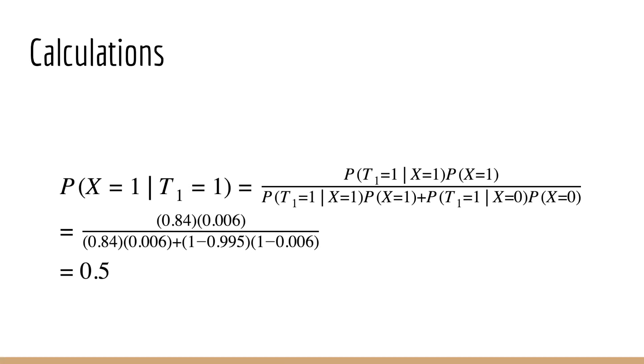Okay, so let's calculate the first posterior. First, you'll recognize that the numerator is just the sensitivity, which is 84%, and the prior, which is 0.6%. On the denominator, we need to find the marginal probability that t1 equals 1. This means that we have to sum over all possible values of x, which means when x equals 1, and when x equals 0. For the case when x equals 1, recognize that this is just the same as the numerator. For the case when x equals 0, we have the probability that the test is positive given that Elon does not have the virus.